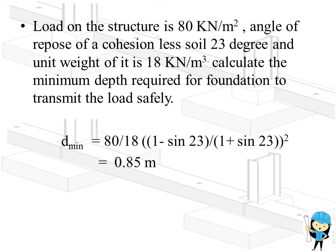So, we will be substituting the values in the Rankine's formula. So, minimum depth is equal to 80 divided by 18 into (1 minus sin 23) divided by (1 plus sin 23) the whole square.